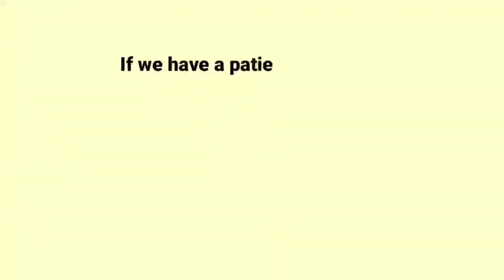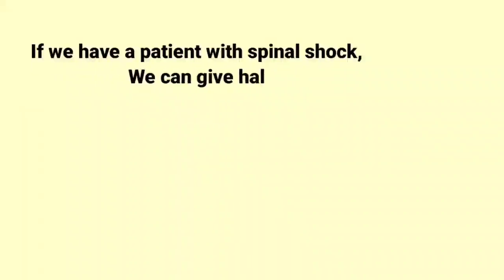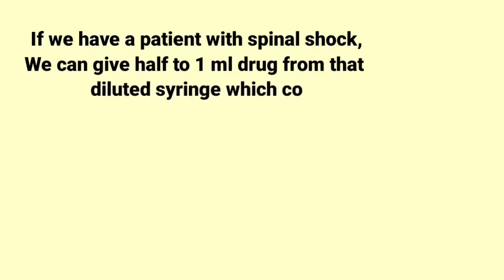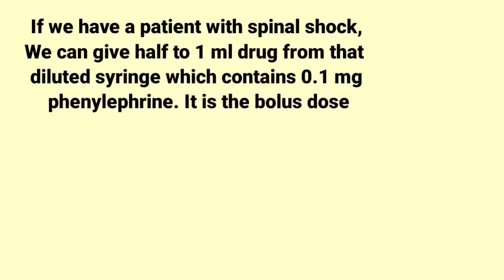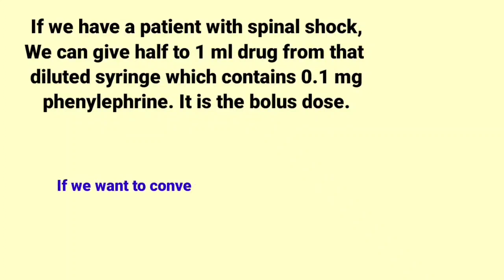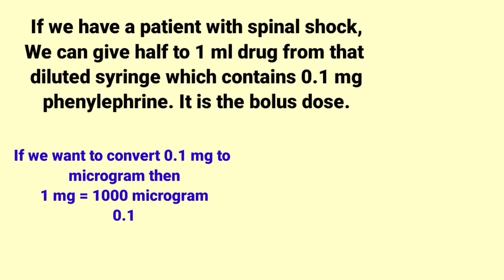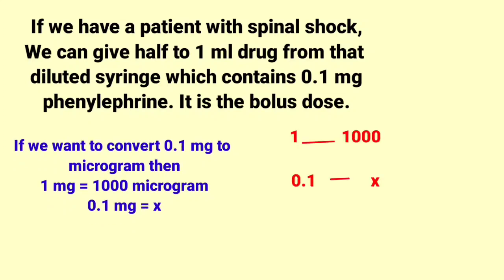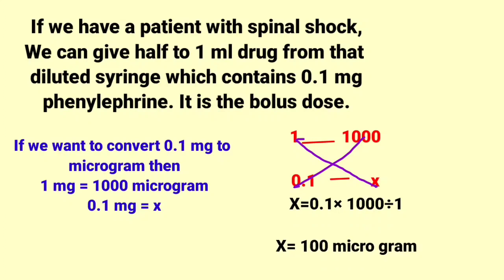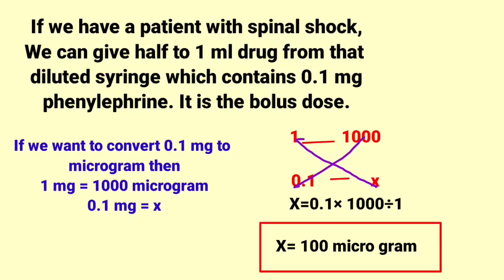Now the solution is prepared. For a patient with spinal shock, give 0.5 to 1 ml from the diluted syringe, which contains 0.1 mg Phenylephrine as the bolus dose. To convert 0.1 mg to micrograms: 1 mg equals 1000 µg, so 0.1 mg equals x. Cross multiplying: x = 0.1 × 1000 µg = 100 µg. So 0.1 mg is equal to 100 µg, which matches the bolus dose stated at the start.